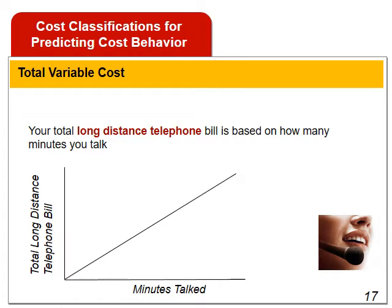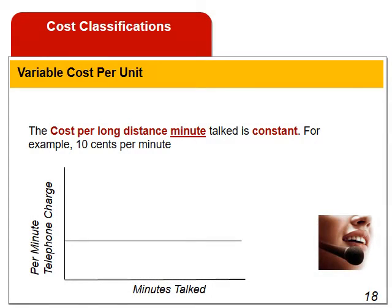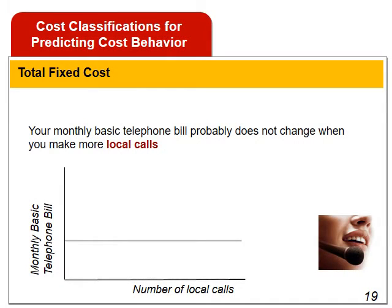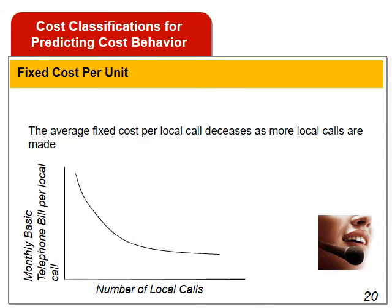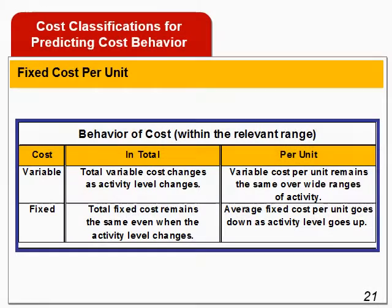In this point we will study predicting cost behavior: variable and fixed costs. Although variable costs change in total as the activity level rises and falls, variable cost per unit is constant. For example, the cost per long-distance minute may be 10 cents a minute. A fixed cost is a cost that remains constant in total, regardless of changes in the level of activity. For example, your monthly basic telephone bill is a set amount that does not change based on the number of calls you make. Fixed costs are fixed over the short term, but not forever. However, if expressed on a per unit basis, the average fixed cost per unit varies inversely with changes in activity — the more local calls you make, the cheaper the cost per local call becomes.